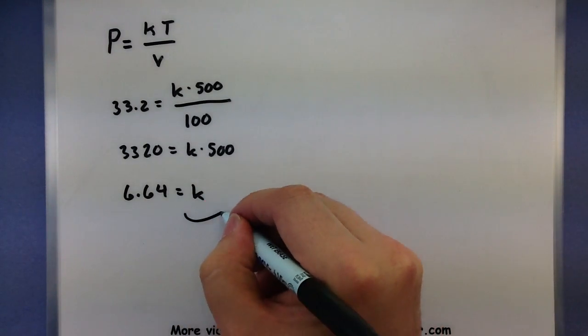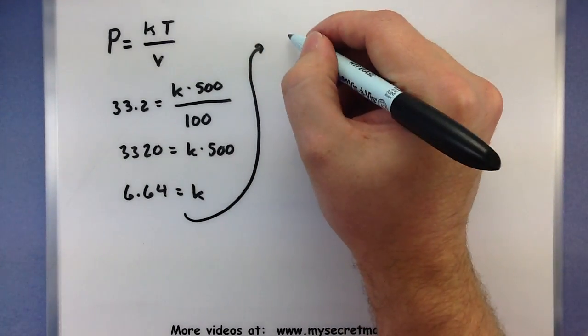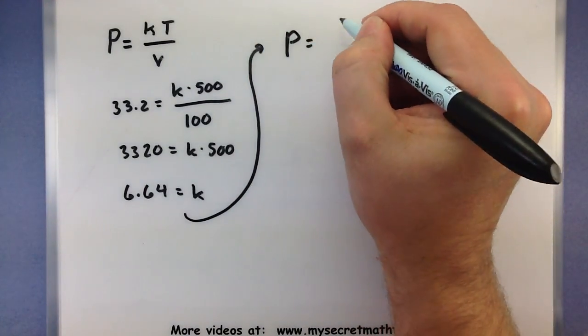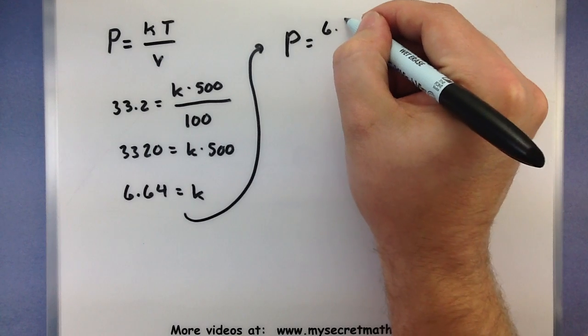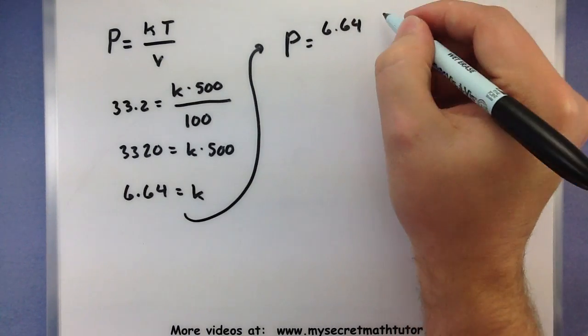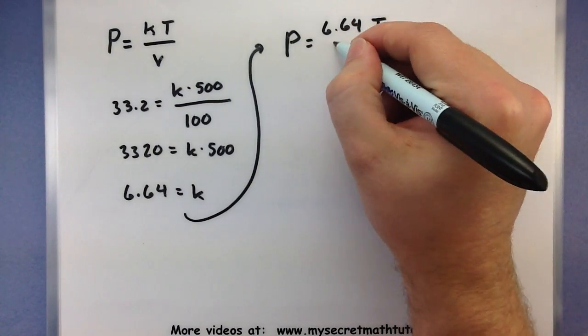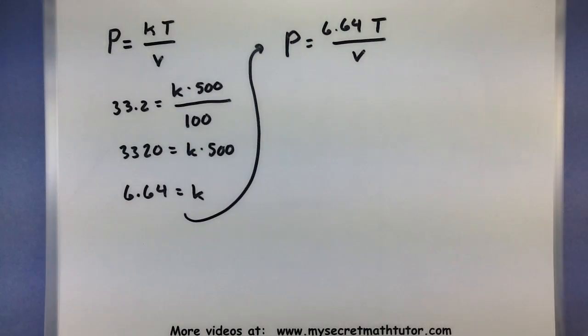Now that we have k, let's go ahead and take it, plug it back into the formula here. So p equals 6.64 temperature all over volume.